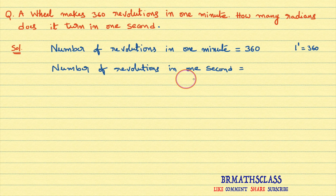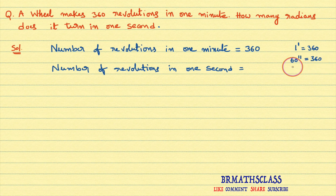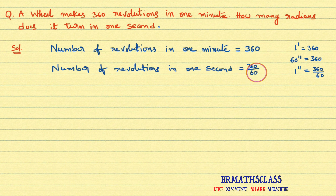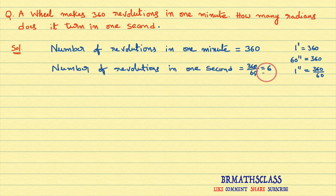I want to know the number of revolutions in one second. One minute is nothing but 60 seconds, so 60 seconds equals 360 revolutions. I want to know in one second, so divide both sides by 60. 60 divided by 60 is 1, and 360 divided by 60 is 6. So the number of revolutions in one second is six revolutions — the wheel makes six revolutions in one second.